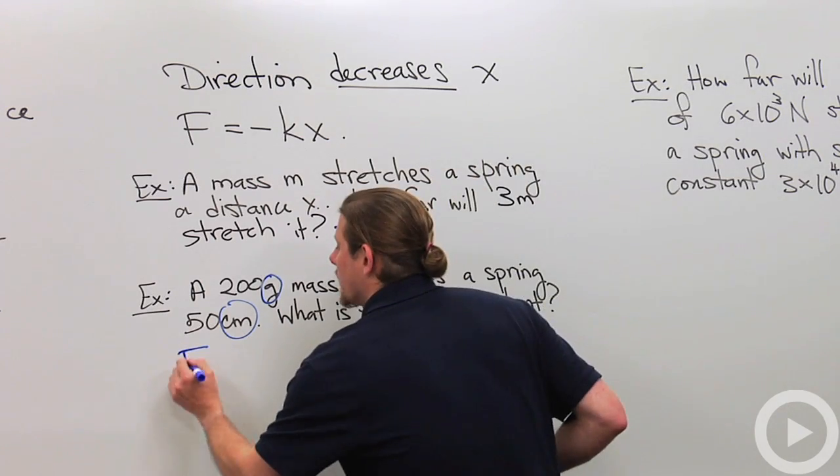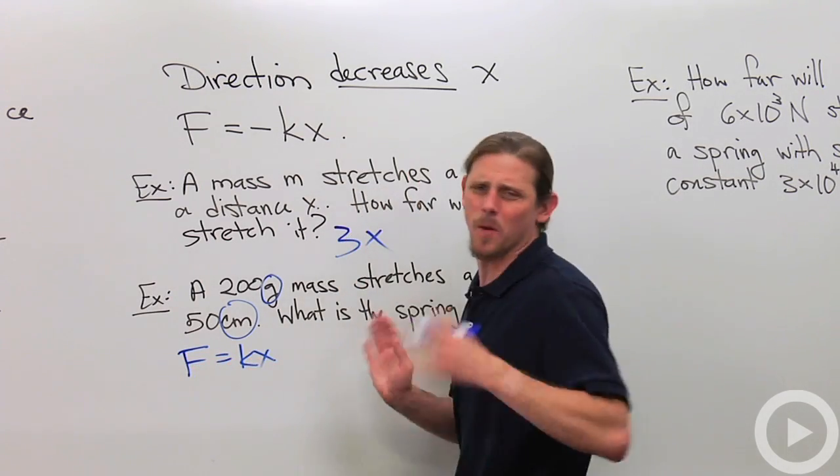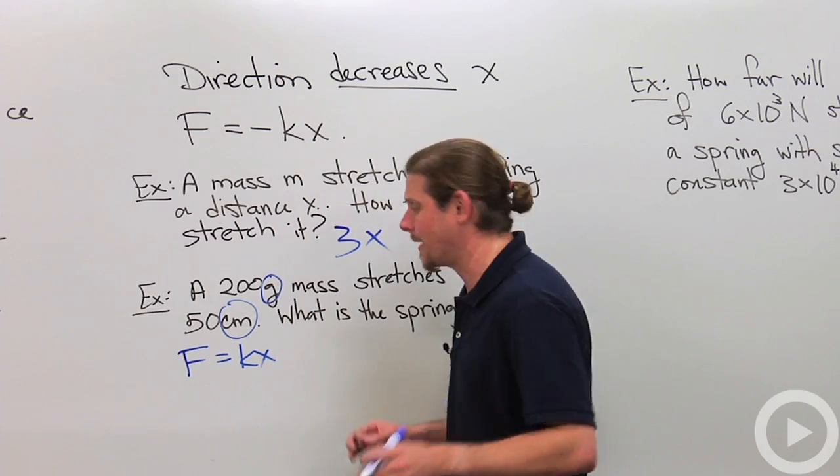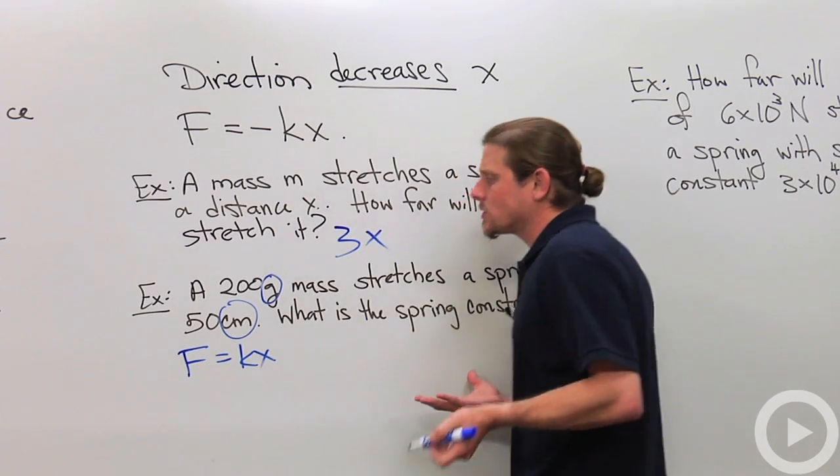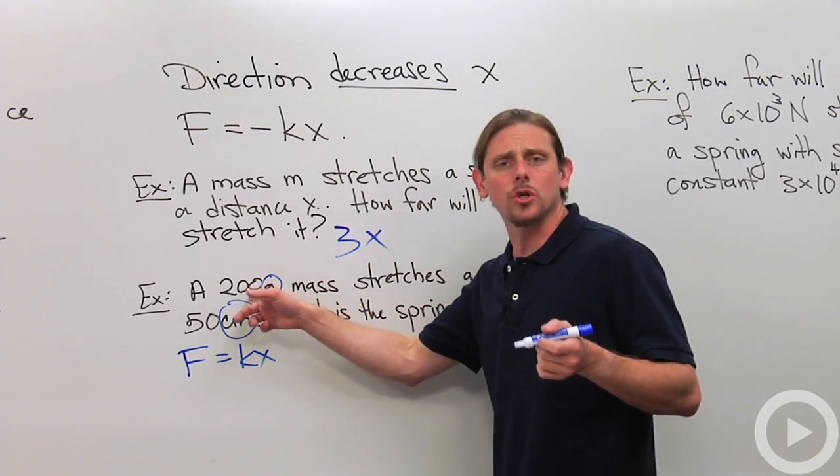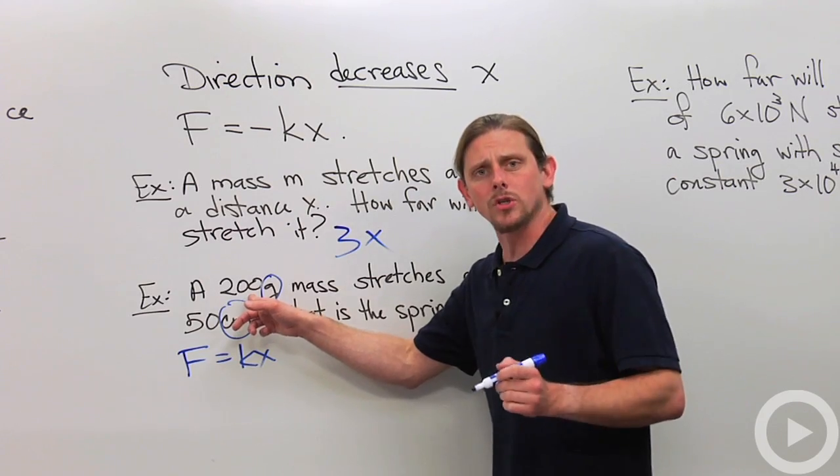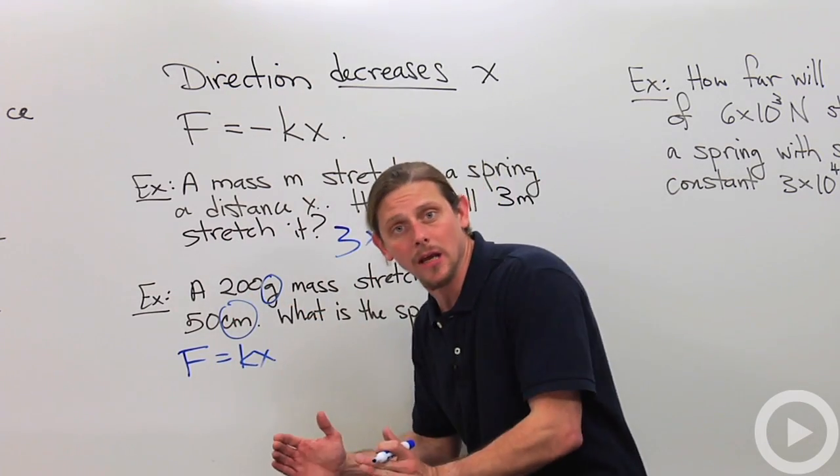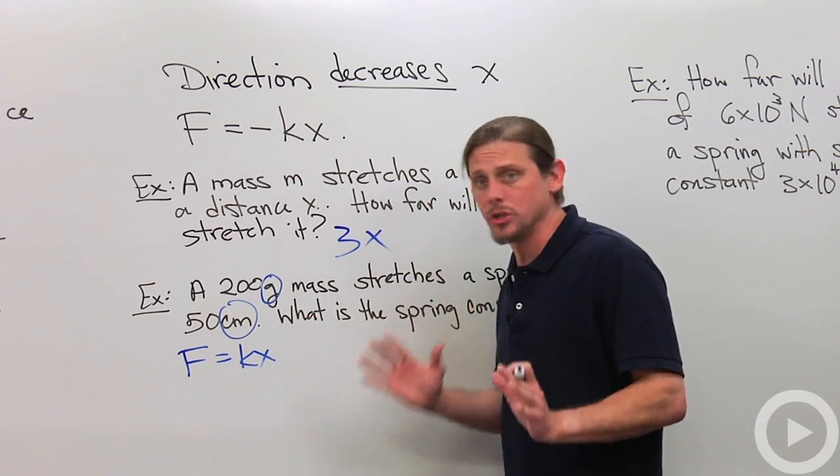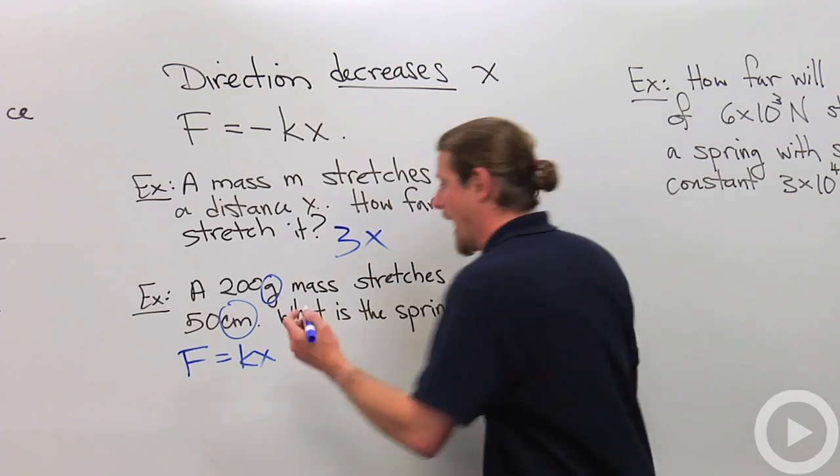Second thing, we're going to write down F equals KX. I don't care about the direction, so I'm not going to write the minus sign. So what's the force? The force is not 200 grams. The force is MG. You've got to multiply by the acceleration due to gravity.